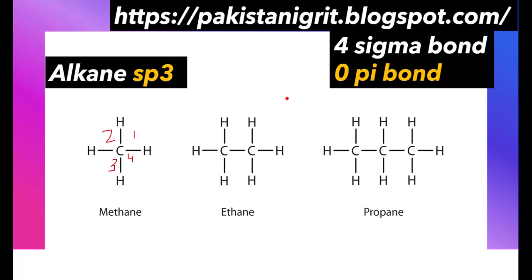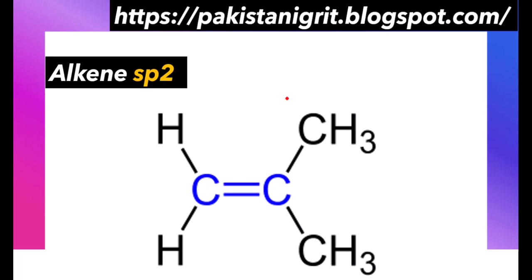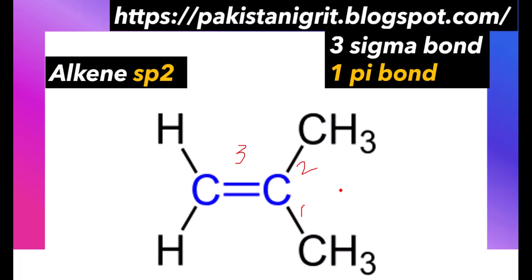The same is the case in ethane and propane. Next, if we discuss alkene, it has sp2 hybridization. Here we have two carbons, and both these carbons are forming one sigma bond less than alkane. So if a carbon is forming three sigma bonds, it will have sp2 hybridization.